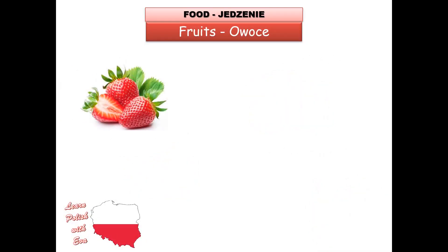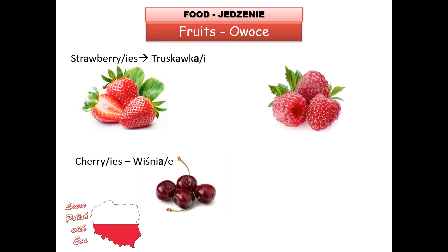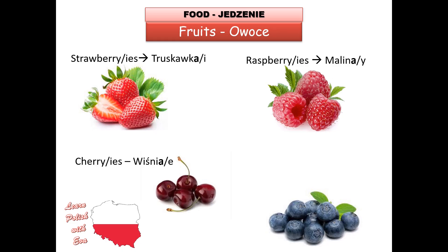Next, strawberries — we love them in Poland! When it's the season for strawberries, 'truskawka', you can see them being sold everywhere. 'Truskawka', 'truskawki'. Also a very popular fruit in Poland is 'wiśnia' — cherry — 'wiśnie'. Raspberries are also very popular of course everywhere: 'malina' in the singular form and 'maliny' in the plural.